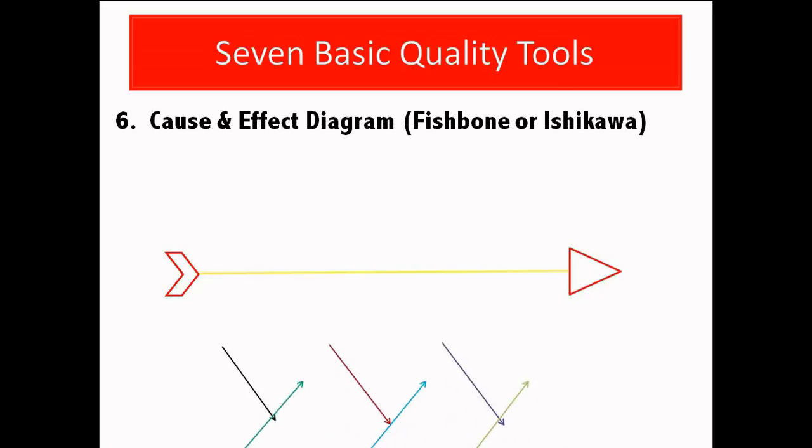This is an example of a fishbone diagram. You can categorize brainstorm possible causes into these 6Ms.